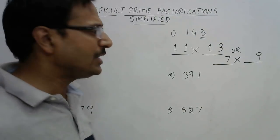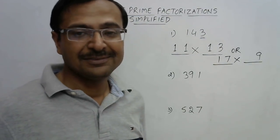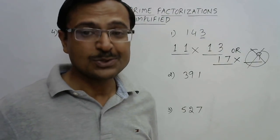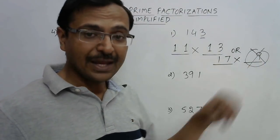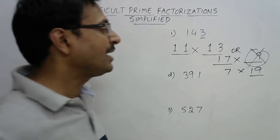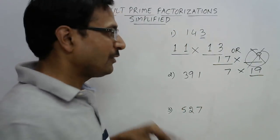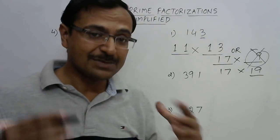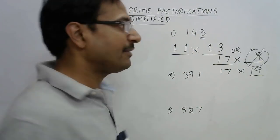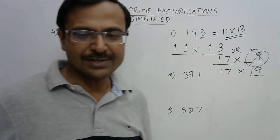You don't need to test 7 and 9, because 9 is not prime. If you prefix 9 by 1 it becomes 19, and the other becomes 7 — but 19 × 7 is not 143. And prefixing further makes it much larger than 143. So the answer is clearly 11 × 13.